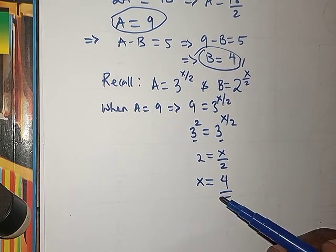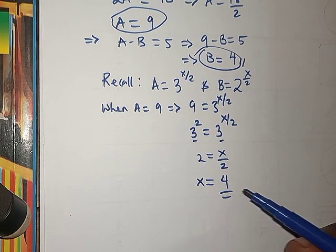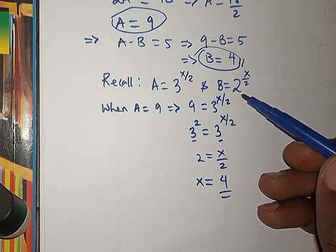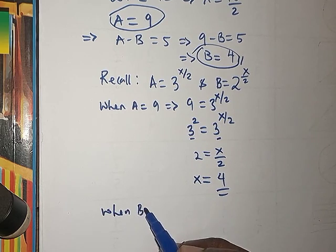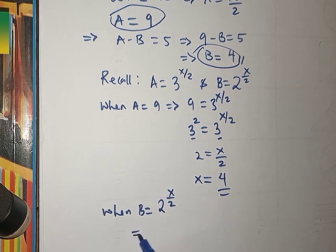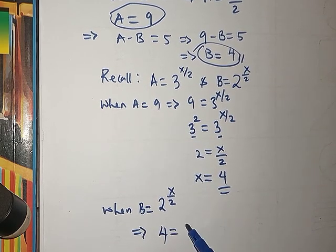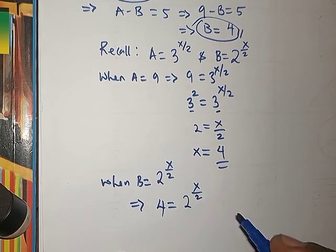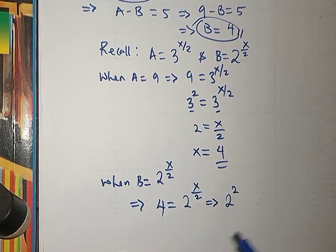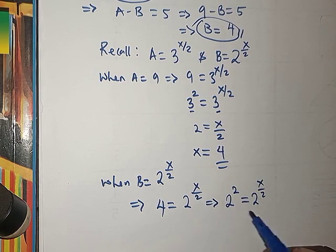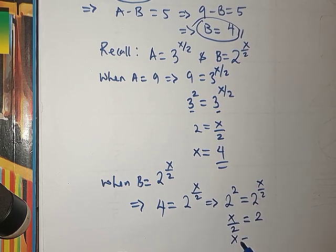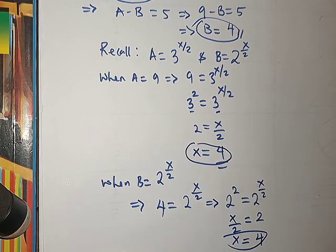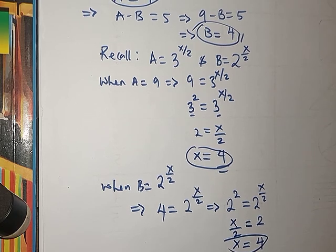To verify, we use B equals 4 and recall B equals 2^(x/2). So 4 equals 2^(x/2). Rewriting 4 as 2^2 gives 2^2 equals 2^(x/2). Equating exponents: x over 2 equals 2, so x equals 4. Both substitutions confirm x equals 4.